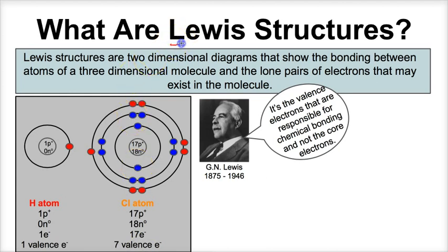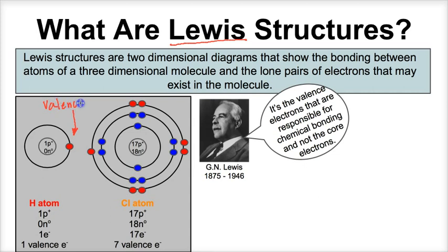Lewis structures are basically diagrams that were created by G.N. Lewis, an American scientist that lived in the 1800s and 1900s. His key idea is that it's the valence electrons — the electrons in the outermost energy level — that are responsible for chemical bonding and chemical reactions. The core electrons, those not considered valence, really have nothing to do with chemical reactions.